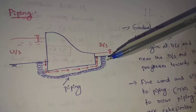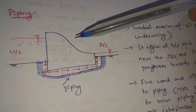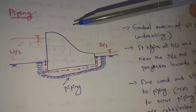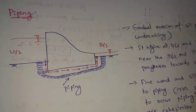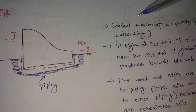This piping failure causes heavy chances of dam collapse. So this piping failure — why does it occur? This is now discussed.